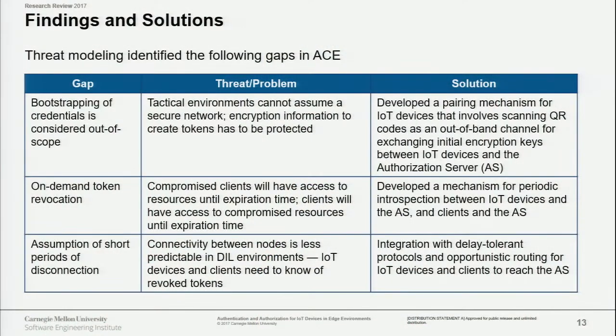The second gap we found in ACE is on-demand token revocation. When node impersonation and capture are major threats, there must be a way to say a token issued three hours ago is no longer valid. So as part of our protocol, we developed periodic introspection — both between the client and the authorization server, and between the resource server and the authorization server — where periodically each party submits its list of tokens and asks whether they are still valid, with revocation applied as needed.